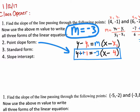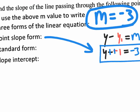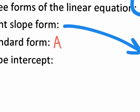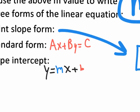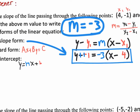The next point we get is changing this equation to either standard form or slope intercept form. Standard form is ax plus by equals c, and slope intercept form is y equals mx plus b. Neither of those have parentheses the way point slope does.